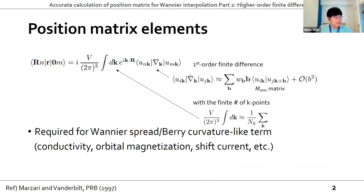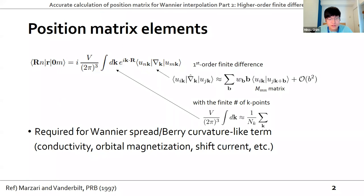We are going to compute position matrix elements. Here v is the volume of the unit cell and u_{nk} is the initial Bloch wave function obtained from the coarse grid calculation. Due to numerical reasons we calculate this k-integral with a finite number of k-points using a discrete k-sum, and calculate the gradients using the first-order finite difference approximation, where b is the neighboring vector from k to k+b and w_b is the corresponding weight or coefficient. These position matrix elements are required for the Wannier spread, Berry curvature terms, and to calculate conductivity, orbital magnetization, spin current, and so on. It is important to make the position converge fast.